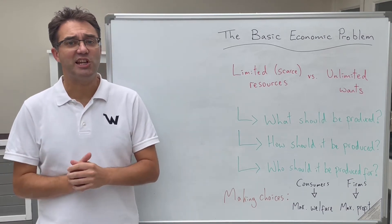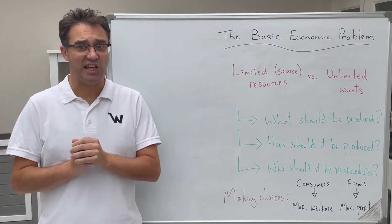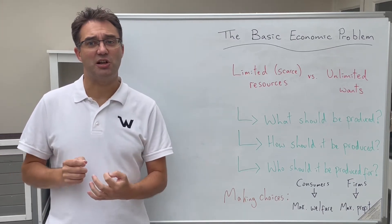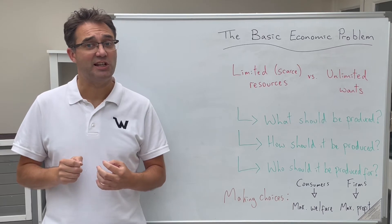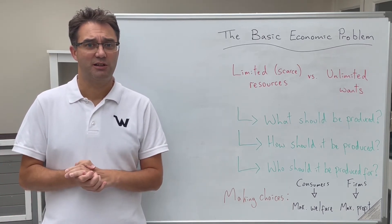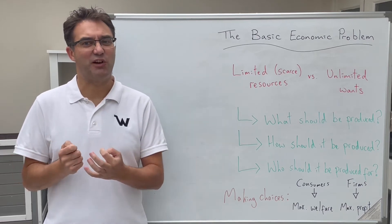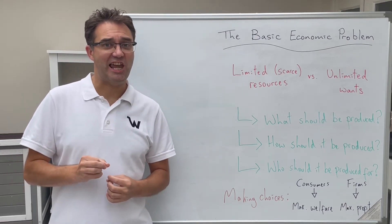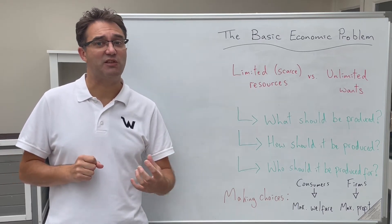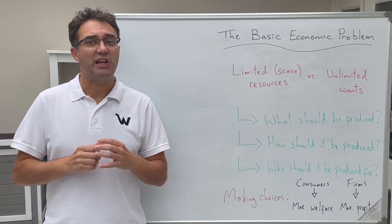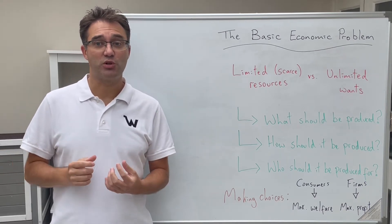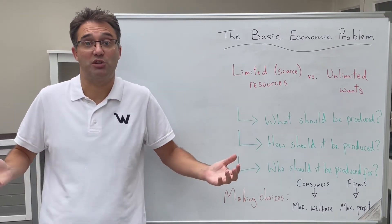The opposing issue we have is that of scarce resources. This means there are insufficient amounts of things that go into making goods and services to be able to produce everything that's wanted by consumers. Rather than saying 'things,' what we'd say instead is 'factors of production,' which are covered in more detail in the next video. So we can now see the economic problem: there just aren't enough resources to make everything that we could possibly want.